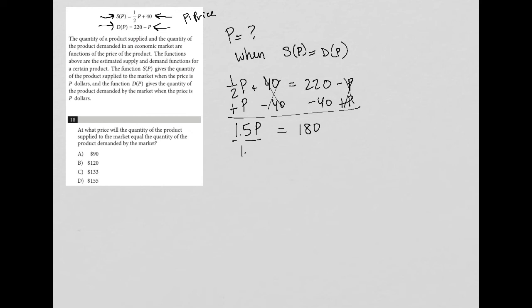So then I divide both sides by 1.5 in order to isolate my P value or my price. So P is equal to 180 divided by 1.5, which when you throw that into your calculator, you will find it gives you a value of $120. So P equals 120 and therefore choice B is the correct answer.